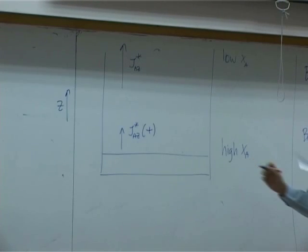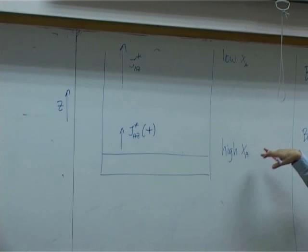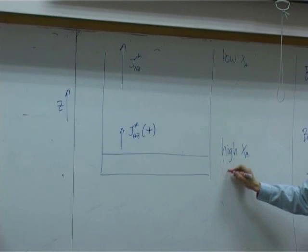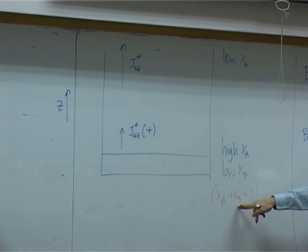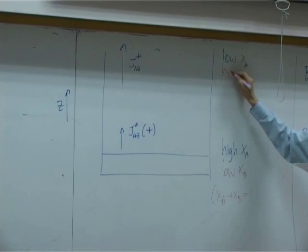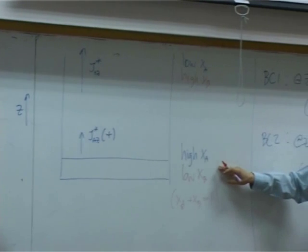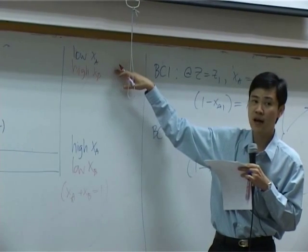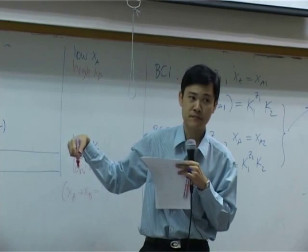Now consider species B. Down here you have high X_A, which means low X_B, because X_A plus X_B equals 1. Up top, you have low X_A, so X_B is high. From high concentration to low concentration, the diffusion flux J_B* goes downward — from high X_B at the top to low X_B at the bottom.